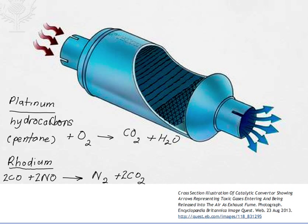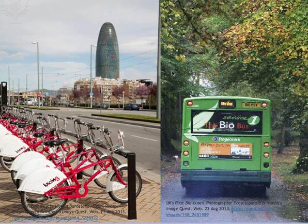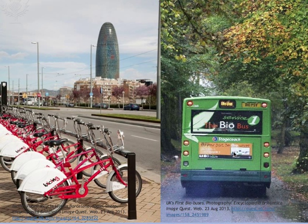The catalytic converter does manage urban air pollution but not the greenhouse effect, as it simply converts one substance into another. For this reason, other strategies are being considered, including using alternative forms of transport and public transport — such as bikes made available to the public for hire in Barcelona, Spain, and buses using alternative fuels in the United Kingdom. People need to be educated and given financial incentives to utilize public transport and bicycles.